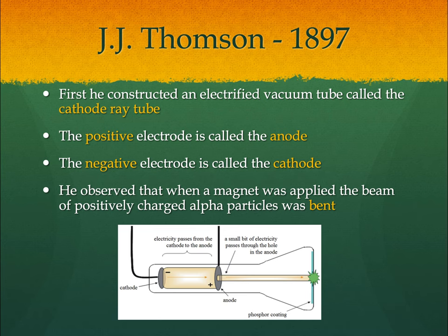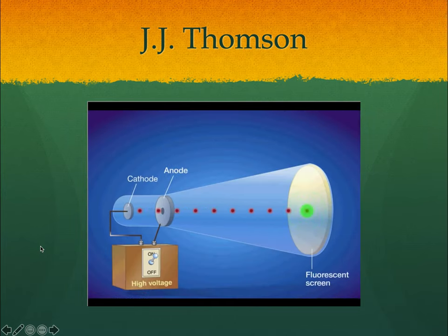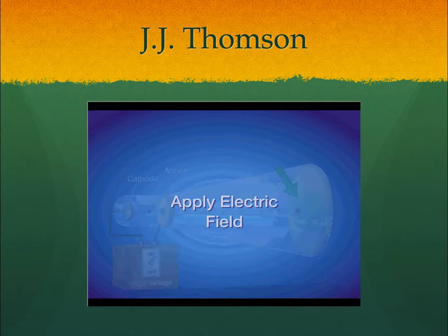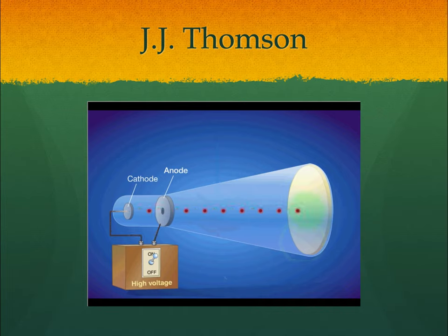JJ Thomson created an electrified vacuum tube called the cathode ray tube and shot a beam of negatively charged particles. He applied a magnet and an electrical charge to this beam to see what would happen. The beam hits a fluorescent screen, and when we apply an electrical field, the beam bends toward the positive electrode — showing us that the beam is negatively charged.